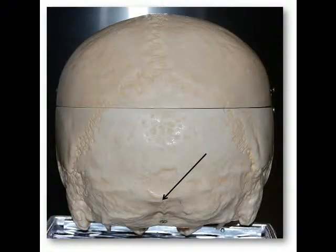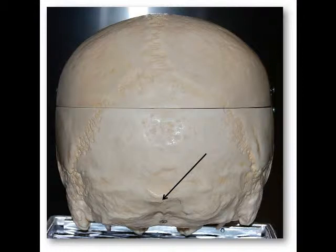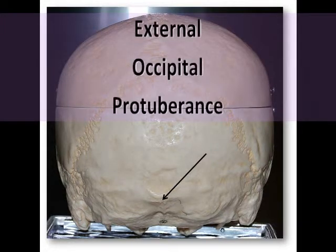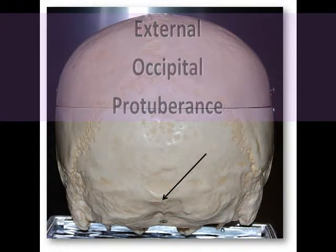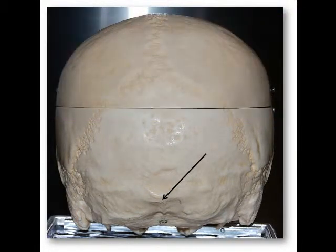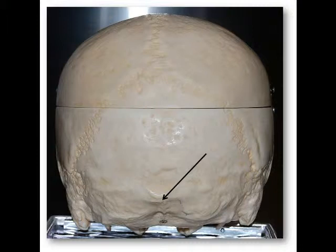Now with your fingers, reach to the back of your head and feel the bump located just above your neck. That is known as the external occipital protuberance. It's an attachment point for the ligamentum nuchae, which connects to the seventh cervical vertebra, C7, to help support the head.